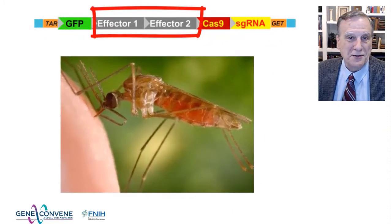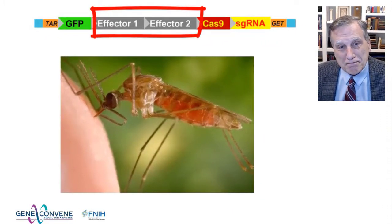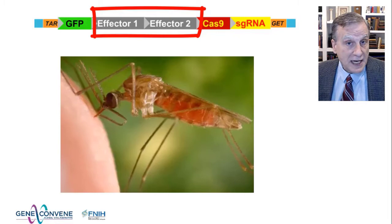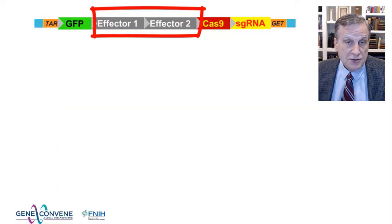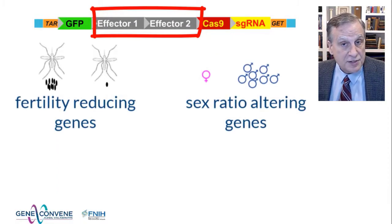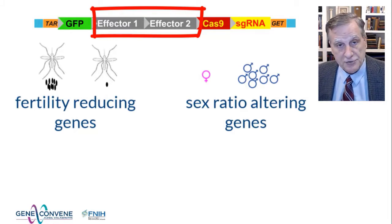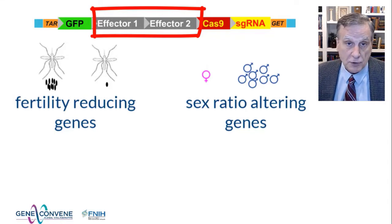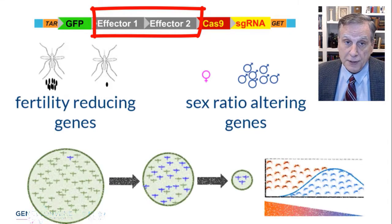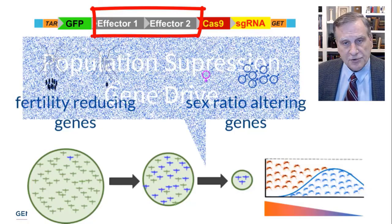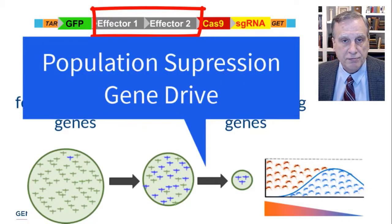What genes are developers attaching to their gene drives and for what purpose? I'd like to tell you about two ways engineered gene drives are being developed in Anopheles gambiae with the intention of reducing malaria transmission. First, genes that reduce the fertility of female Anopheles gambiae, or genes that alter the ratio of males to females, are being attached to gene drives. When these systems are introduced into populations of Anopheles gambiae in the laboratory, the populations over the course of ten generations or so are severely reduced or even eliminated. This is referred to as population suppression gene drives.